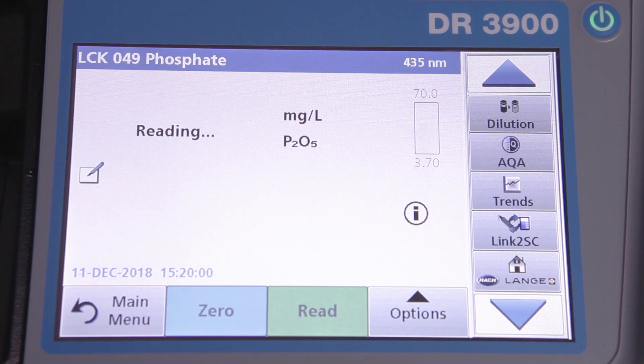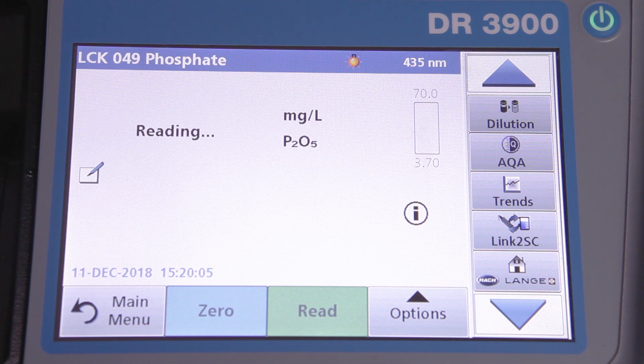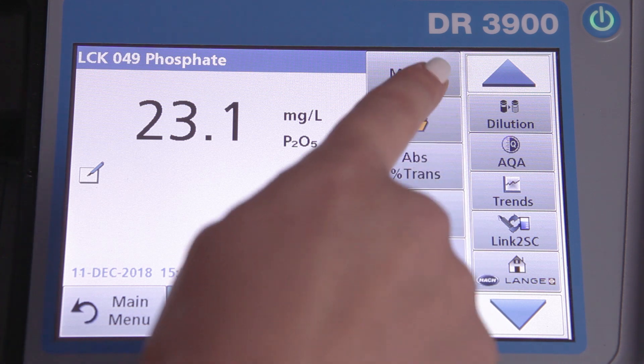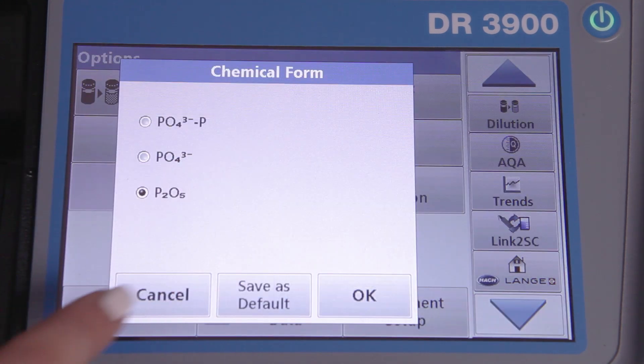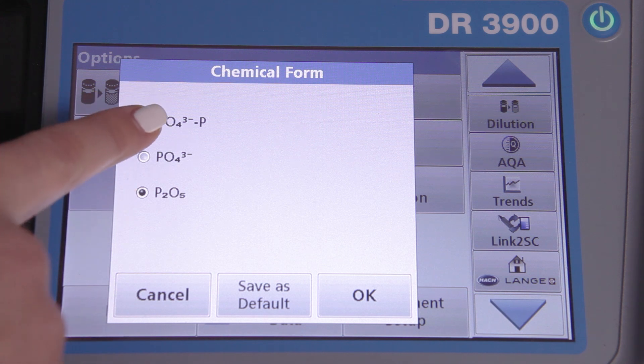It turns and makes 10 measurements. The average of the measurements is automatically calculated and illogical measurements are excluded. The Lassa Agro 3900 also allows to display the results in different chemical forms.